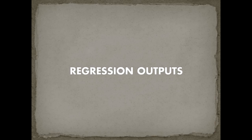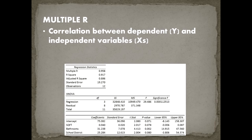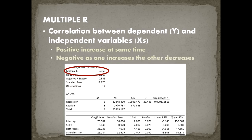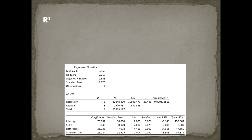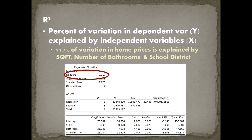Let's look at the regression outputs. The first output is Multiple R — the correlation between the dependent and independent variables. A positive value means both move in the same direction; a negative value means they move in opposite directions. Next is R squared, located right below Multiple R, which tells us the percent of variation in the dependent variable explained by the independent variables. We'd read it as: 91.7% of variation in home prices is explained by square footage, number of bathrooms, and school district.